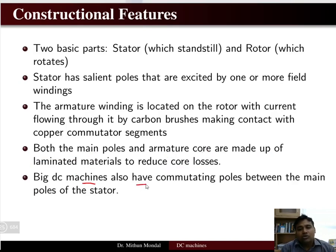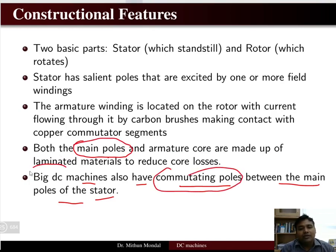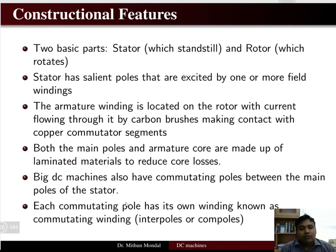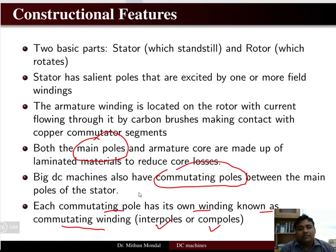Big DC machines also have commutating poles between the main poles of the stator. Apart from the main poles, you have commutating poles for big DC machines. Each commutating pole has its own winding, also known as commutating winding, or otherwise interpoles or compoles.